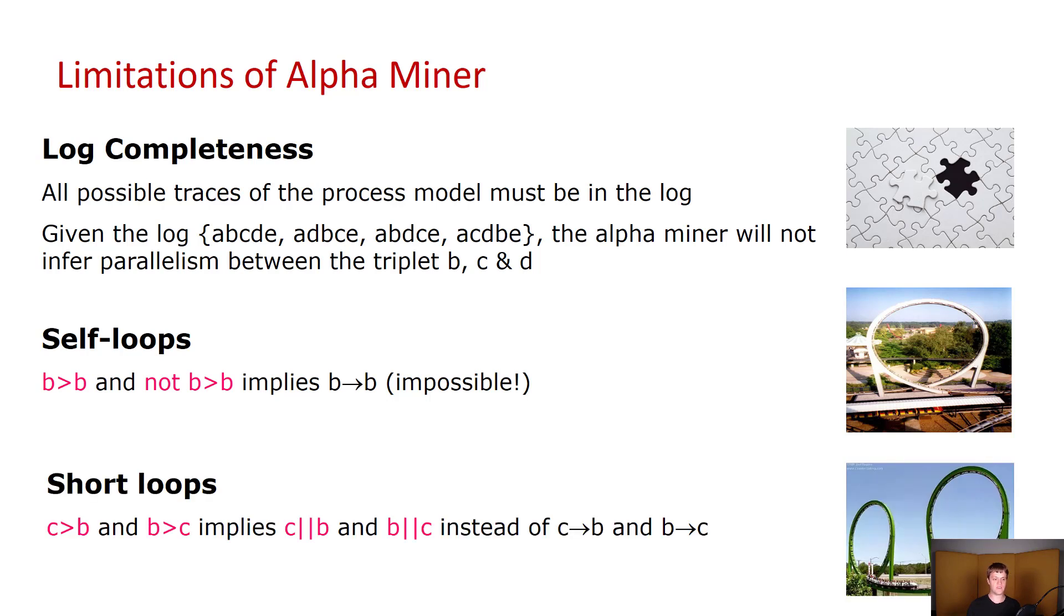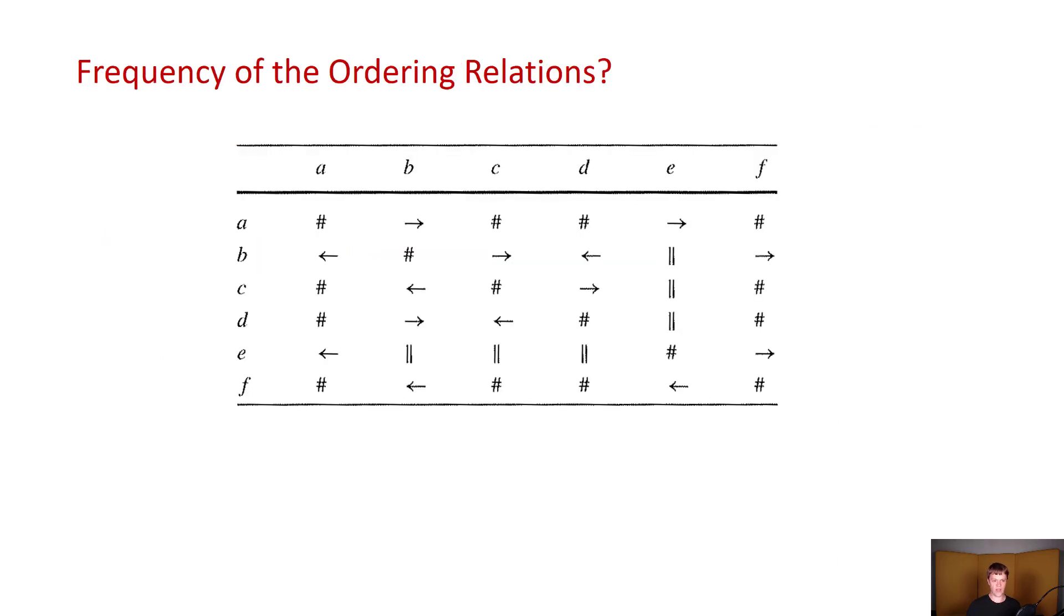And it also has difficulty understanding short loops. That is, in case of the alpha miner, a short loop is going to always be represented as parallelism. Now there are ways how to get around these limitations. And the main idea here would be to figure out and consider the frequency of the ordering relations that you are using to build your process map. One of the approaches that does this is the heuristics miner. However, in this part of the lecture, I will not go into details about it.